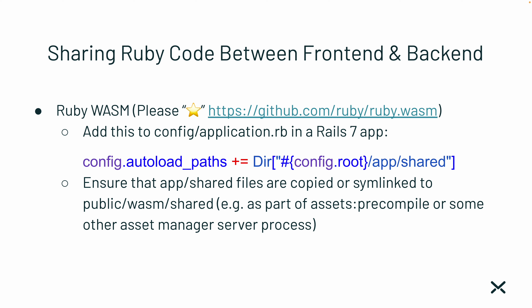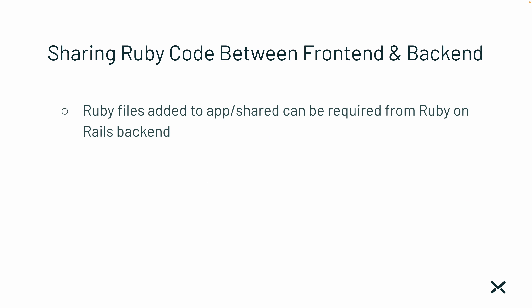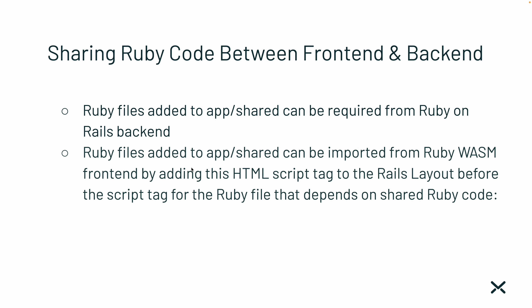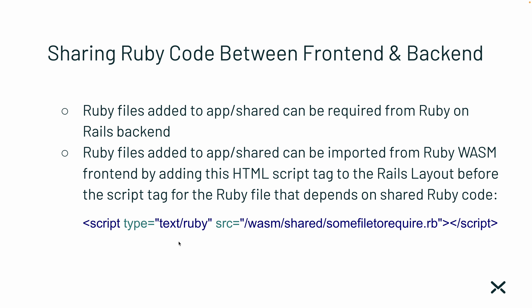This is because Ruby Wasm is extremely new. Opal Ruby is a bit older — it actually came out around 2014 or maybe even earlier, so it's extremely mature. Ruby files added to app/shared can be required from the Rails back end. However, on the front end with Wasm, it's not as straightforward — I cannot just add a require statement and have it work. Instead, anything added to app/shared becomes available under public/wasm/shared, and I can import it in a Ruby Wasm front end by adding an HTML script tag above the main app script.